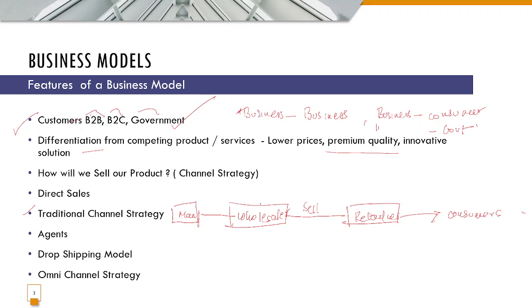In the traditional channel strategy, once the manufacturer sells to the wholesaler, ownership of the goods gets transferred to the wholesaler. When the wholesaler sells to the retailer, ownership transfers from wholesaler to retailer. Once the retailer sells to the consumer, ownership gets transferred to the consumer. The cement sector and pharma sector still use this traditional channel strategy.